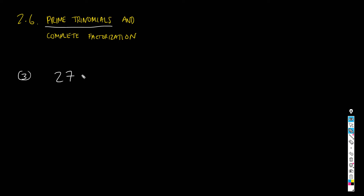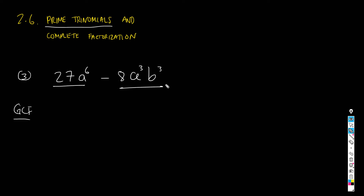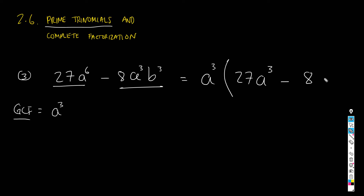One last example, number 3: 27a to the 6th minus 8a cubed b cubed. This is a difference of two terms and looks like a difference of cubes. Before applying the difference of cubes formula, let's first use the GCF. Both terms share a common factor of a cubed, so factorizing gives a cubed times (27a cubed minus 8b cubed).